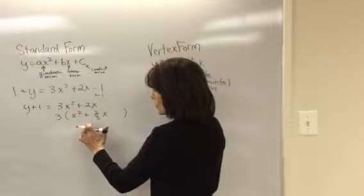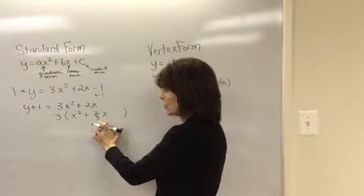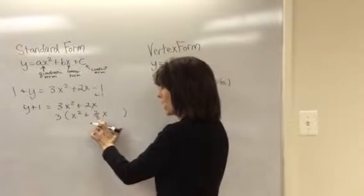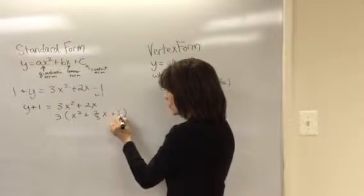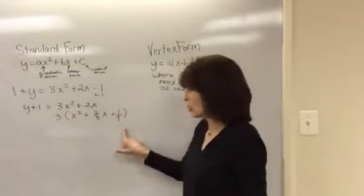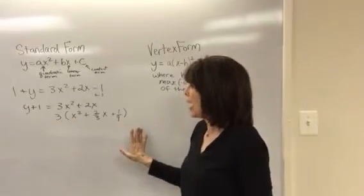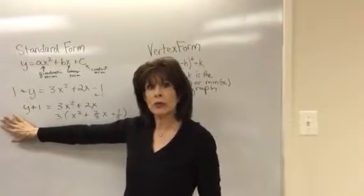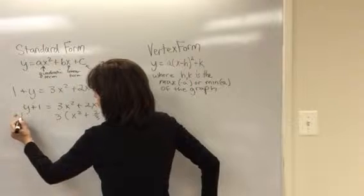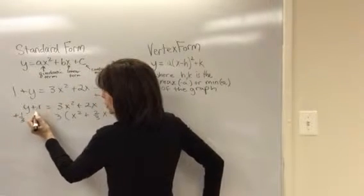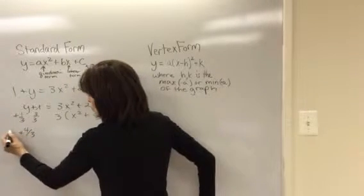Now to make a perfect square I need to take my linear term, take half of it, and square that value. So half of two thirds is one third squared is one ninth. Now remember I'm not really adding one ninth to this side, I'm actually adding three times one ninth, three ninths. And so I need to make sure I add three ninths, which is also one third, to the left hand side. So I add one third, I change one to three thirds, and I now have four thirds plus y equals three times this perfect square.